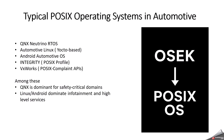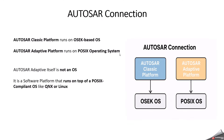Currently in the automotive industry, QNX is dominant for safety-critical domains, and Linux or Android dominate infotainment and high-level services. According to Autosar, the Classic platform runs on an OSEK-based operating system, while the Adaptive Autosar platform runs on a POSIX operating system. One important point: Autosar Adaptive itself is not an operating system — it is a software platform that runs on top of a POSIX-compliant OS like QNX or Linux.